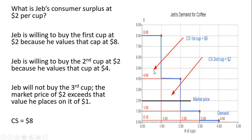We can break this area up into two rectangles. The first rectangle has area width times length: 8 minus 2 multiplied by 1 minus 0, which is $6. The second smaller rectangle to the right has area 4 minus 2 times 2 minus 1, so 2 times 1, giving $2. In total, when Jeb buys two cups of coffee at a market price of $2, he receives consumer surplus of $8 — $6 on the first cup plus $2 on the second cup.